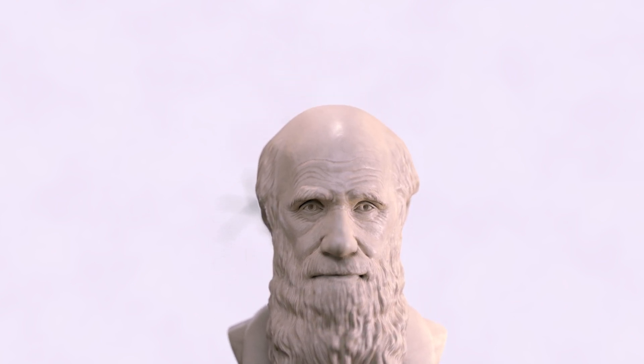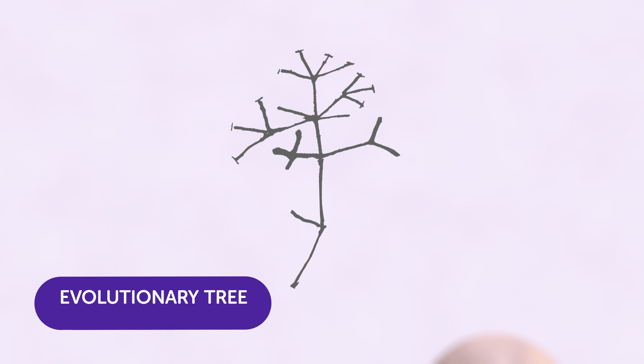More than 150 years ago, Charles Darwin first drew evolution like a tree, predicting that different species branch off from their ancestors.